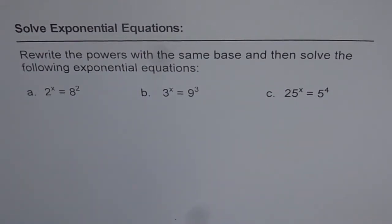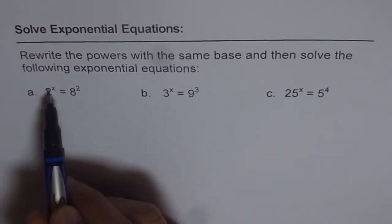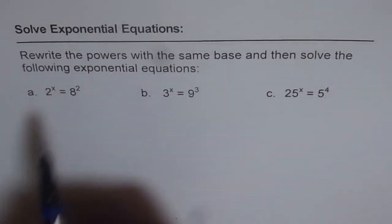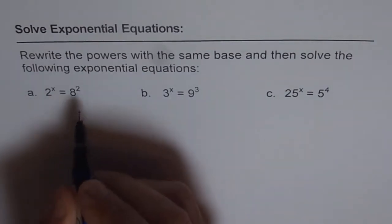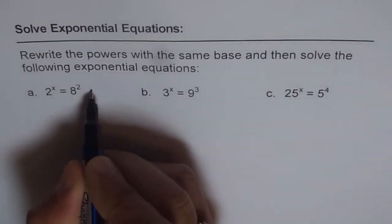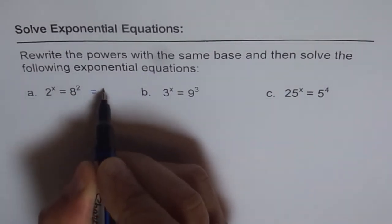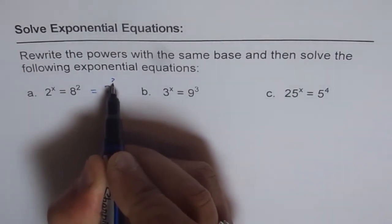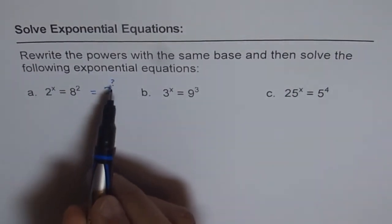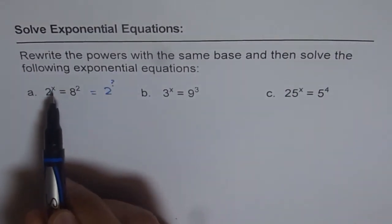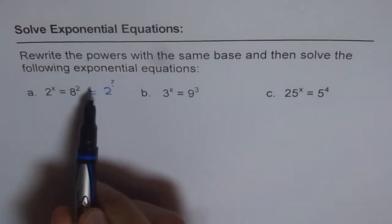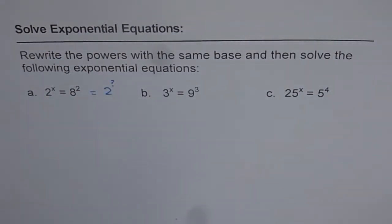Let me show you how with the help of these three examples. We have 2 to the power of x equals to 8 square. What we are supposed to do here is write 8 square as 2 to the power of something. Once we get that, x will be equal to that value. That is the whole concept we are going to follow to solve all these exponential equations.